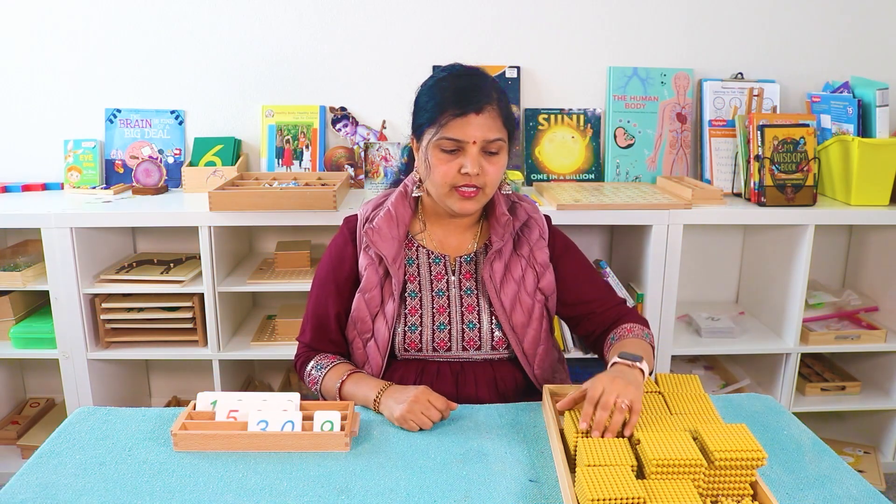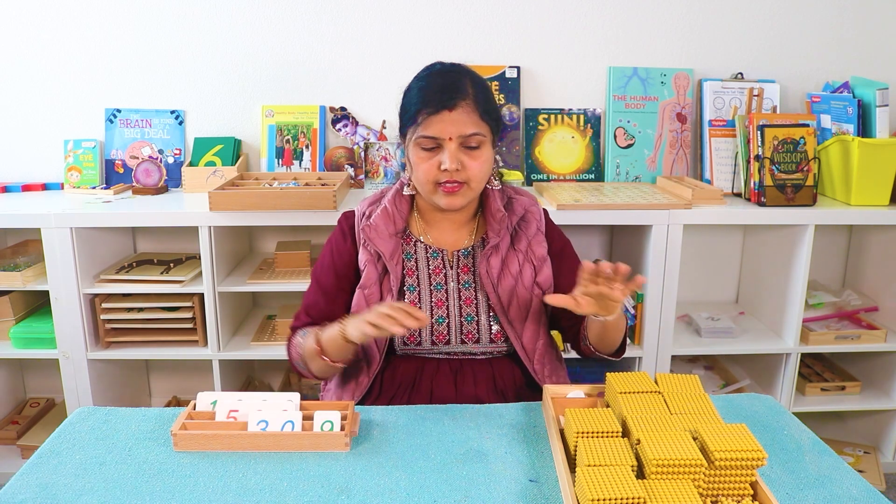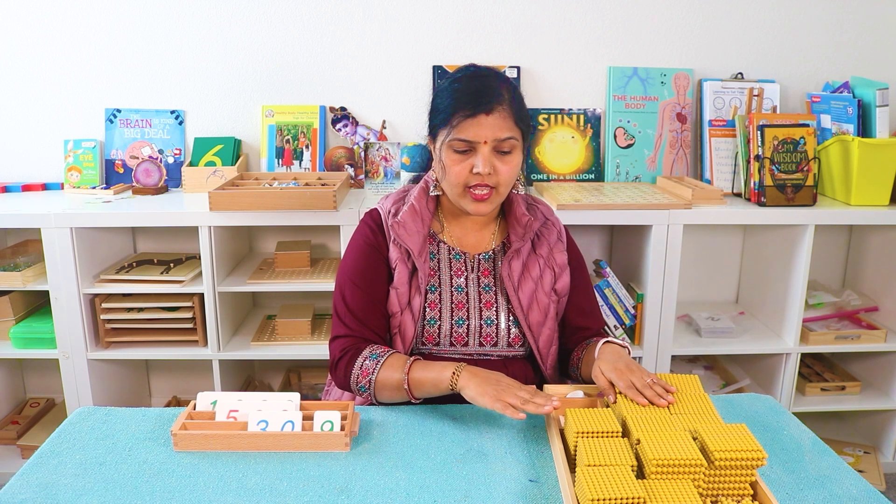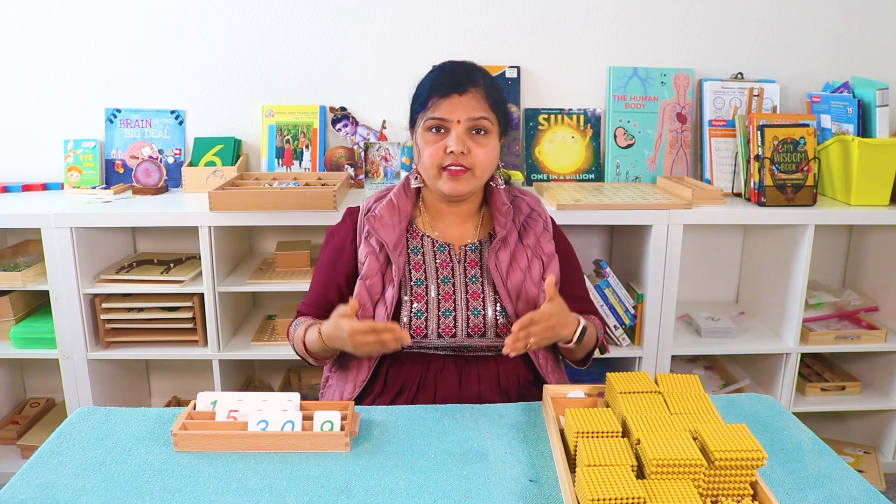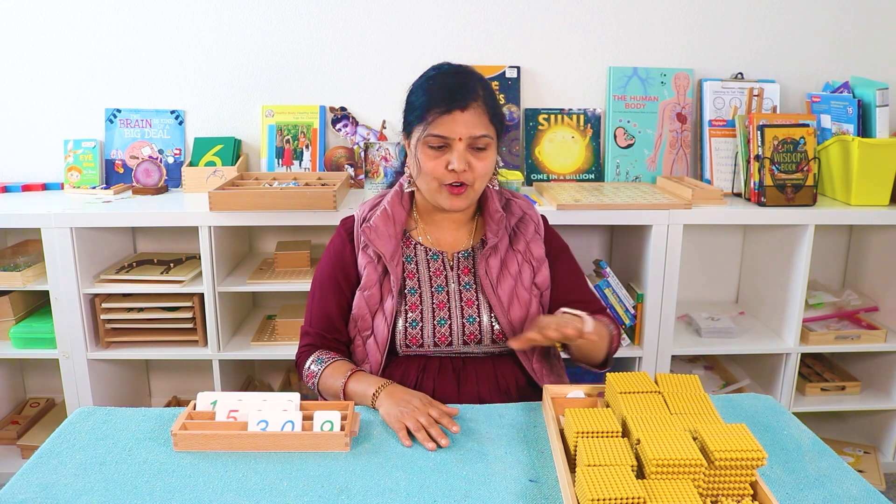This is one more work where you can incorporate a lot of movement. Generally the tray is sitting right next to the rug where their work area is. But if your child needs a lot of movement, you can put this tray with the materials across the room where they have to get up, go get the work, and then work on their rug. This will add more fun to the work.